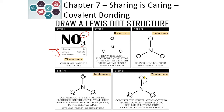The second step is to draw the least electronegative — the most metallic, the one furthest left and down on the periodic table — in the center, with the other elements surrounding it. Step 3 is to draw a single bond from each of the outer elements to that central element.